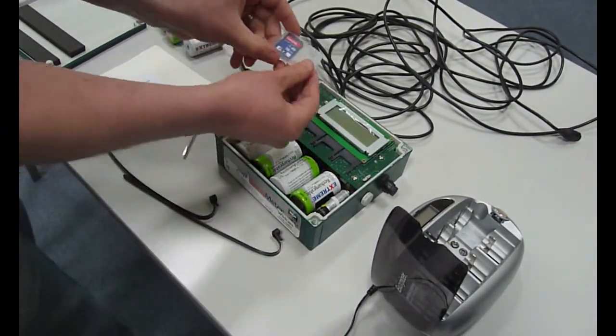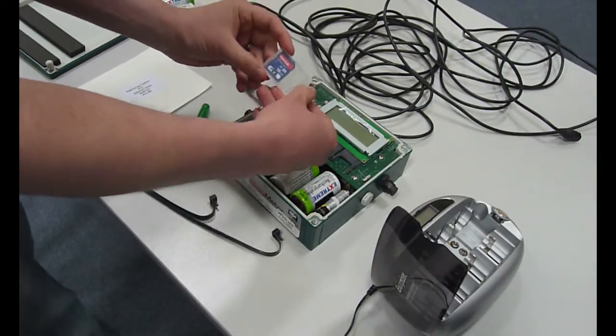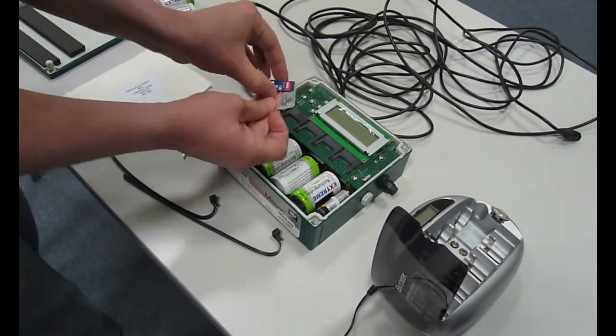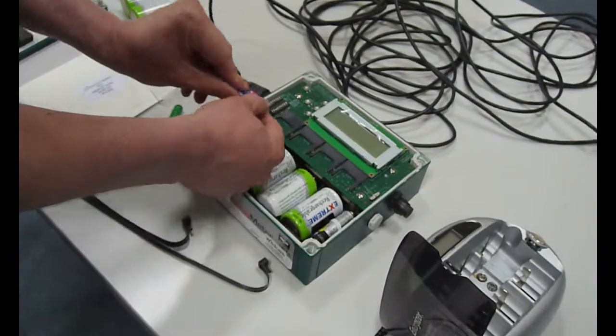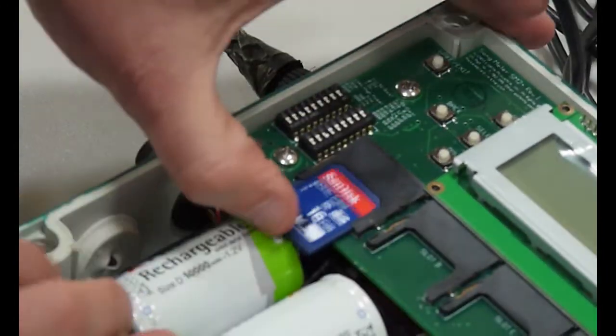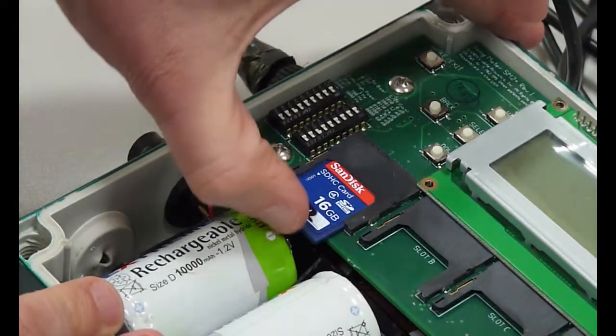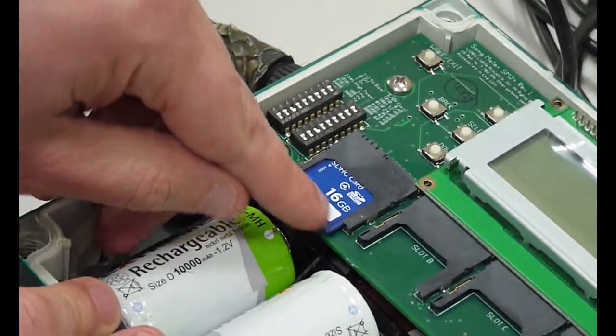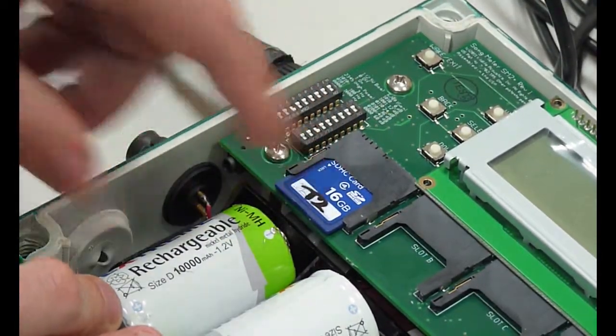Okay, the batteries are in place. What you then need to do is take the memory card and put that into the first slot. It says slot A next to it. You just make sure there's a clicking noise to ensure it's actually clicked into place.